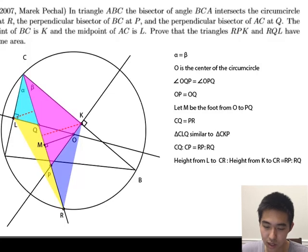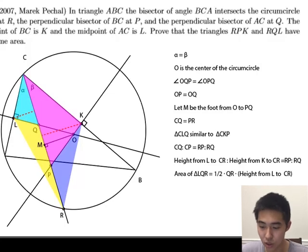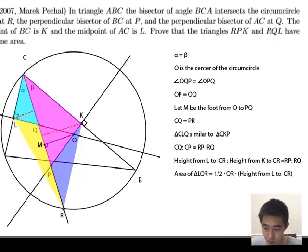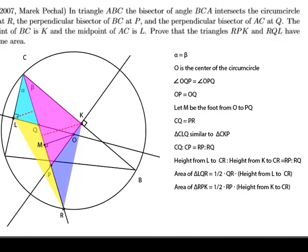Now we look at the areas of the original two triangles. The area of LQR is one-half times QR times the height from L to CR. Similarly, the area of RPK is one-half of RP times the height from K to CR.